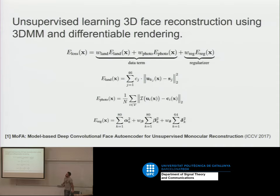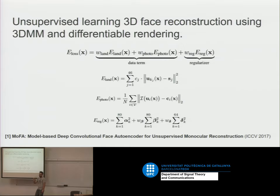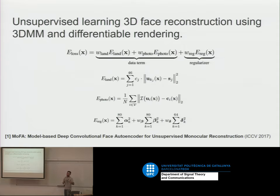The other term is regularization. When we work with morphable models, this is almost mandatory. You always need to penalize if the alpha vector has a big norm. Big norms mean you are going far from the mean, and since these models assume a Gaussian representation, going far from the mean means the result is less likely to happen — you will get very weird shapes. So we want to keep the norms of the vectors small. This regularization term always appears everywhere.